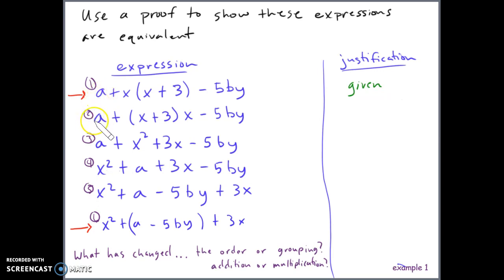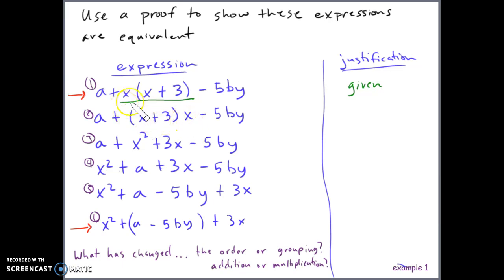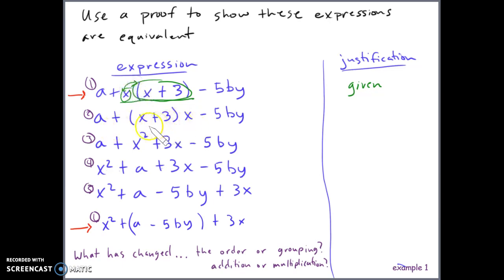From expression 1 to 2, we go from a plus x times (x plus 3) minus 5b to a plus (x plus 3) times x. The change happened: we went from x times (x plus 3) to (x plus 3) times x — they changed the order of the factors being multiplied. There is no addition sign between them, so they commuted multiplication. This is the commutative property of multiplication.